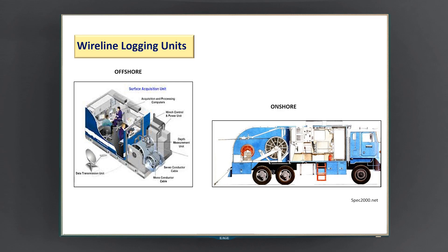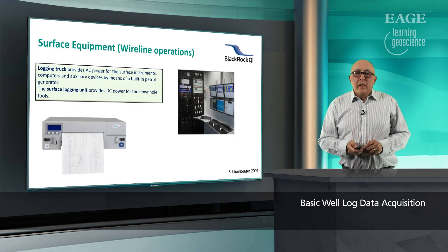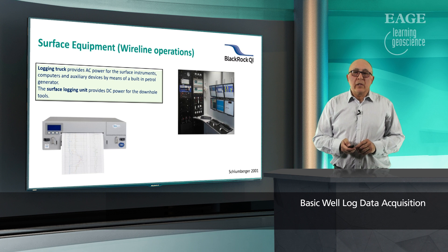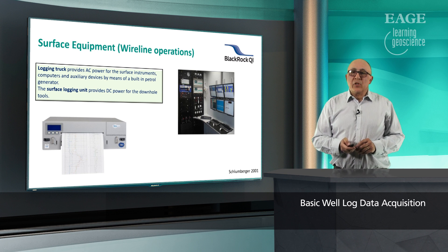In this slide, we have the wireline logging units. On the left-hand side is the offshore unit and on the right-hand side is the onshore unit. This has the small enclosures from which all the operations are conducted. The logging truck provides AC power for the instruments inside the truck, and surface logging units provide DC power for the downhole tools. The computerized data acquisition system is installed inside the logging cab.